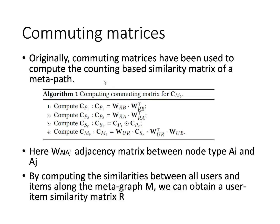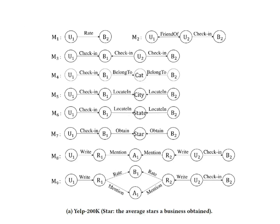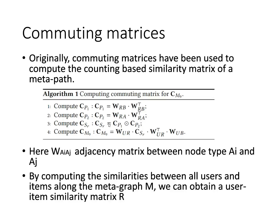The second step is computing a similarity matrix for each metagraph path. For example, using metagraph m9, they first calculate the matrix between review and business, then the reverse. They also calculate from review to aspects and the reverse. After calculating those, they use the Hadamard product to merge all matrices, obtaining a user-item similarity matrix R.